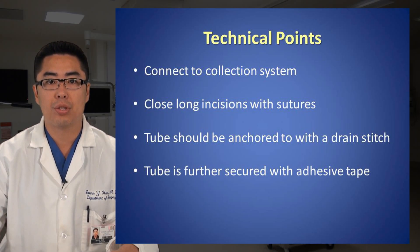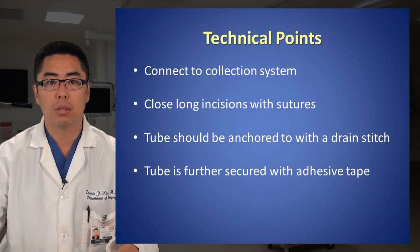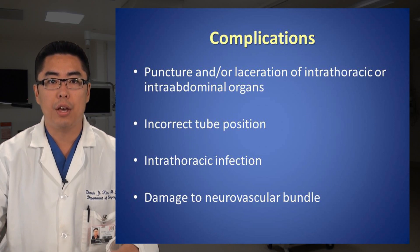Following insertion of the chest tube, it should be connected to the appropriate collection system and secured. Long incisions should be closed with sutures and the tube should be anchored to the patient with a drain stitch, ideally using an O-silk suture. The tube should be further secured with adhesive tape.